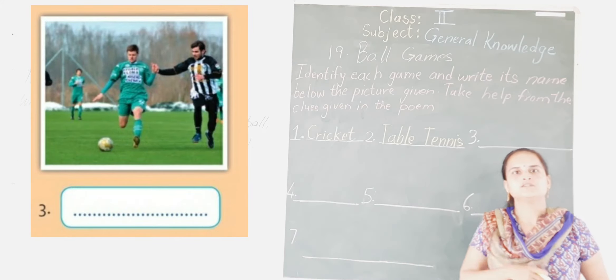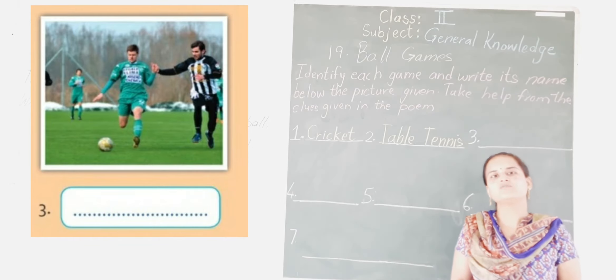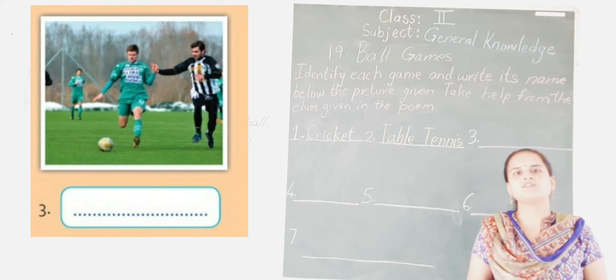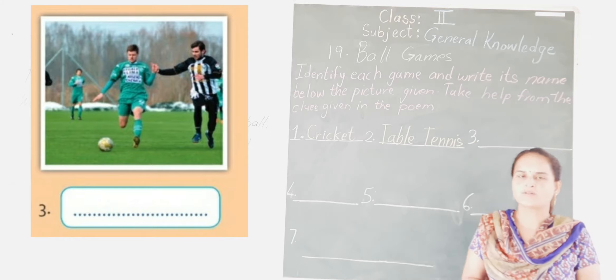The third one — can you see which game it is? Have you played this game? Yes, it is football. Many players are there and it is played between two teams. They have to use their foot to get that ball to the goal, which is a rectangular shaped net. With the help of the foot, the player has to score a goal. So the third picture is football.